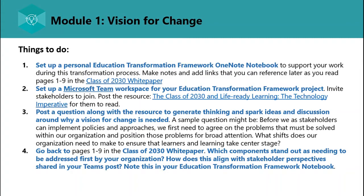A sample question might be: before we as stakeholders can implement policies and approaches, we first need to agree on the problems that must be solved within our organization and position those problems for broad attention. What shifts does our organization need to make to ensure that learners and learning take center stage? Then go back to pages one to nine in the Class of 2030 white paper and ask which components stand out as needing to be addressed first, and how this aligns with stakeholder perspectives shared in your team's post. Note this in your Education Transformation Framework Notebook.